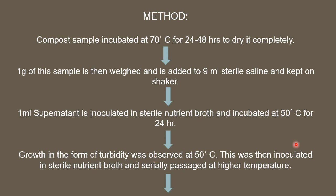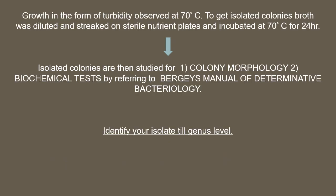Growth in the form of turbidity is a positive sign. The inoculated nutrient broth is then serially passaged at higher temperatures — several flasks are inoculated from the first tube of nutrient broth and incubated at 70 degrees Celsius. After incubation, turbidity again indicates the presence of thermophilic bacteria in your sample. The broth is then diluted and streaked on sterile nutrient plates.